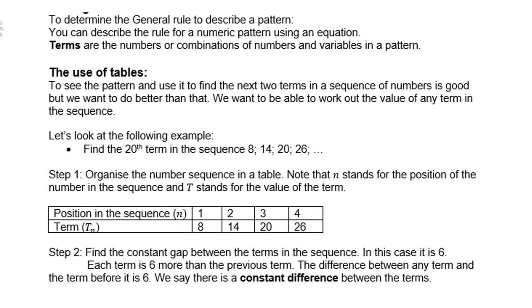To determine the general rule to describe a pattern, you can describe the rule for a numeric pattern using an equation. Terms are the numbers or combinations of numbers and variables in a pattern. We can also use tables. To see the pattern and use it to find the next two terms in a sequence is good, but we want to be able to work out the value of any term in the sequence.